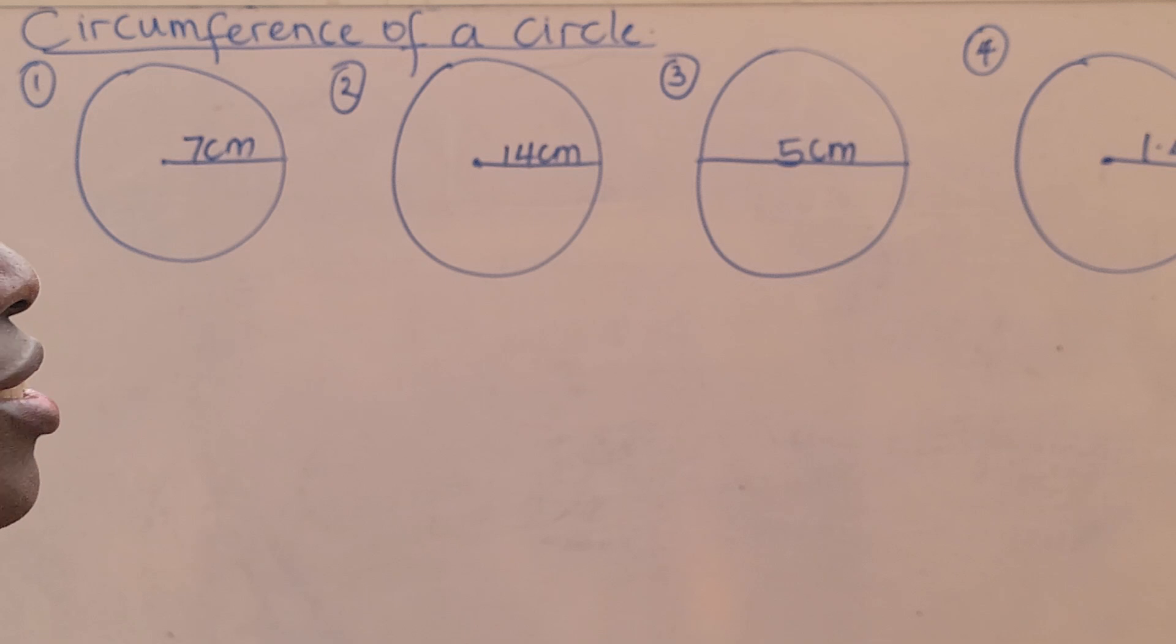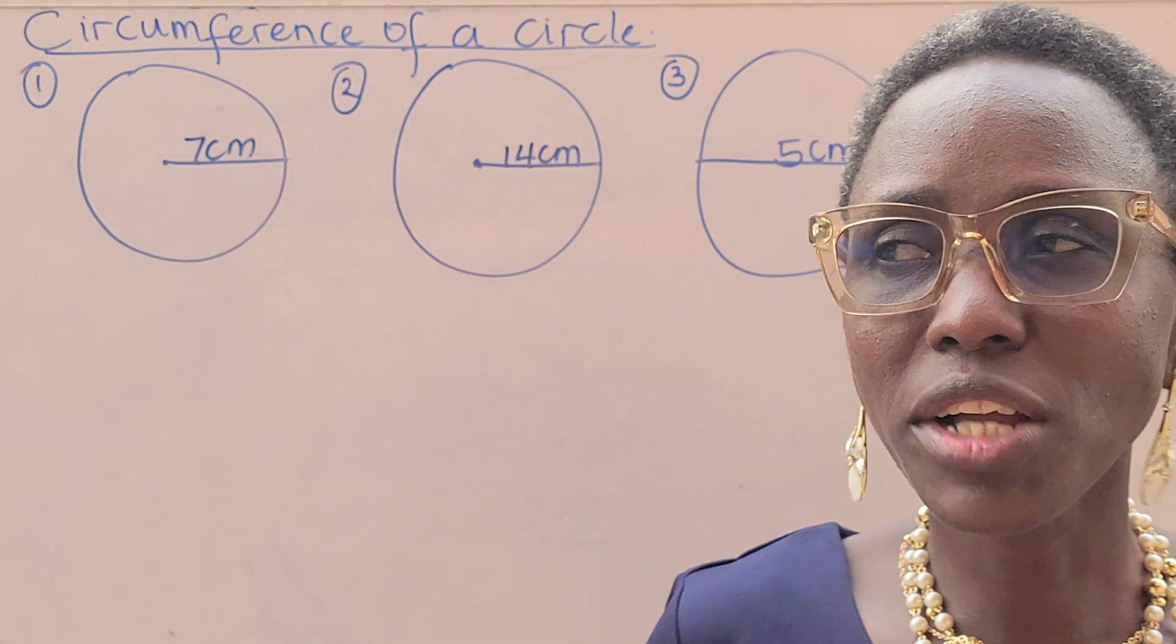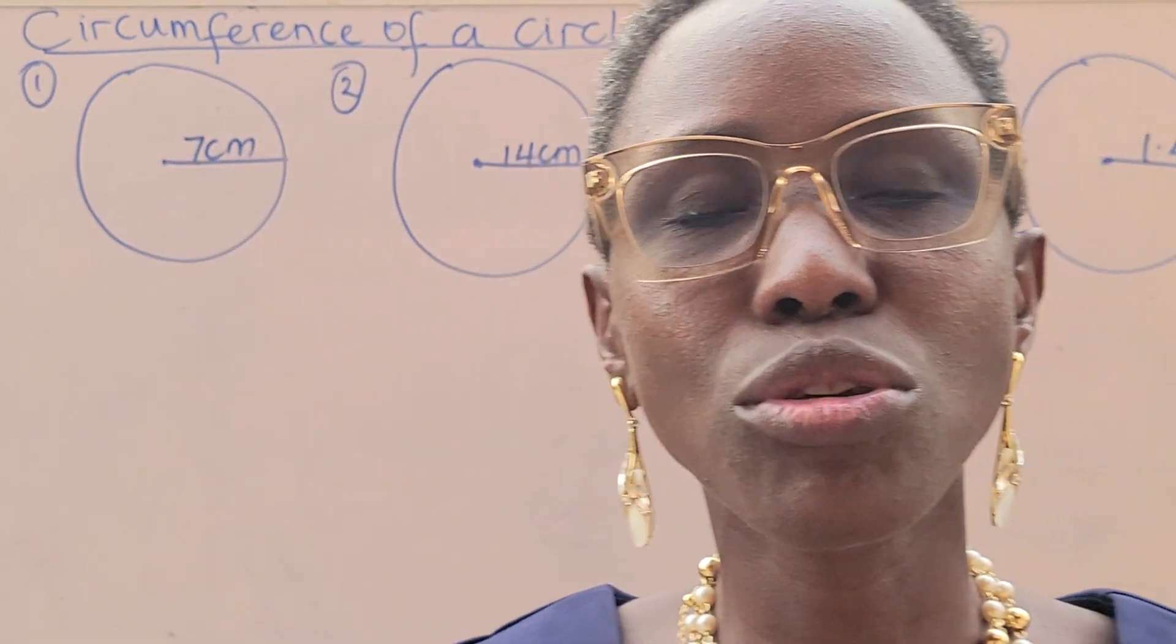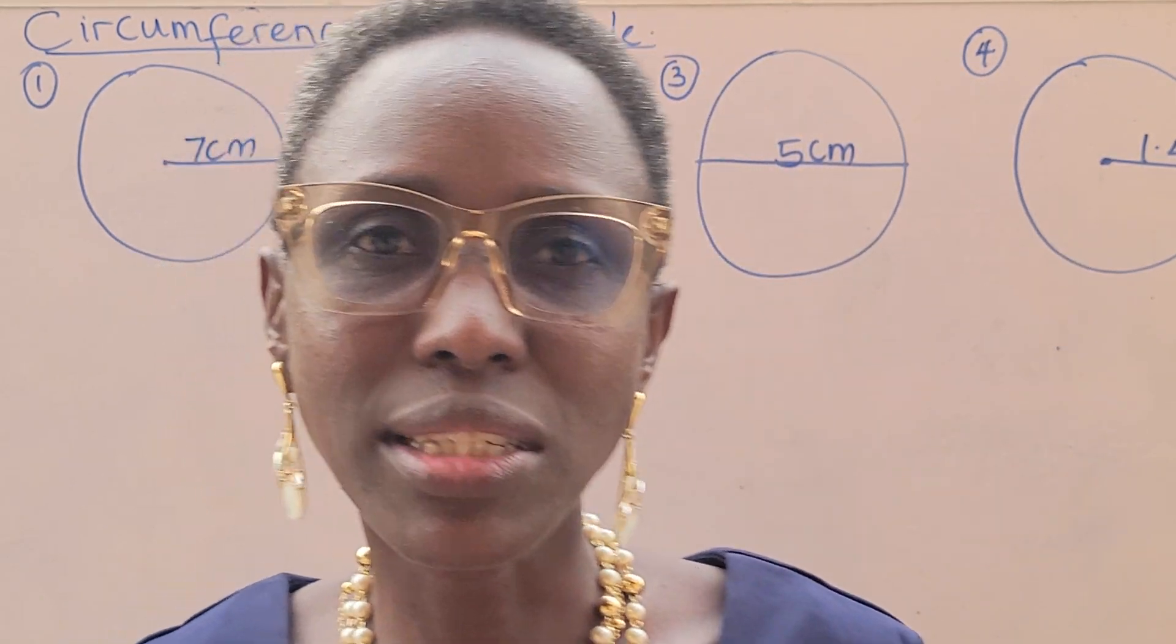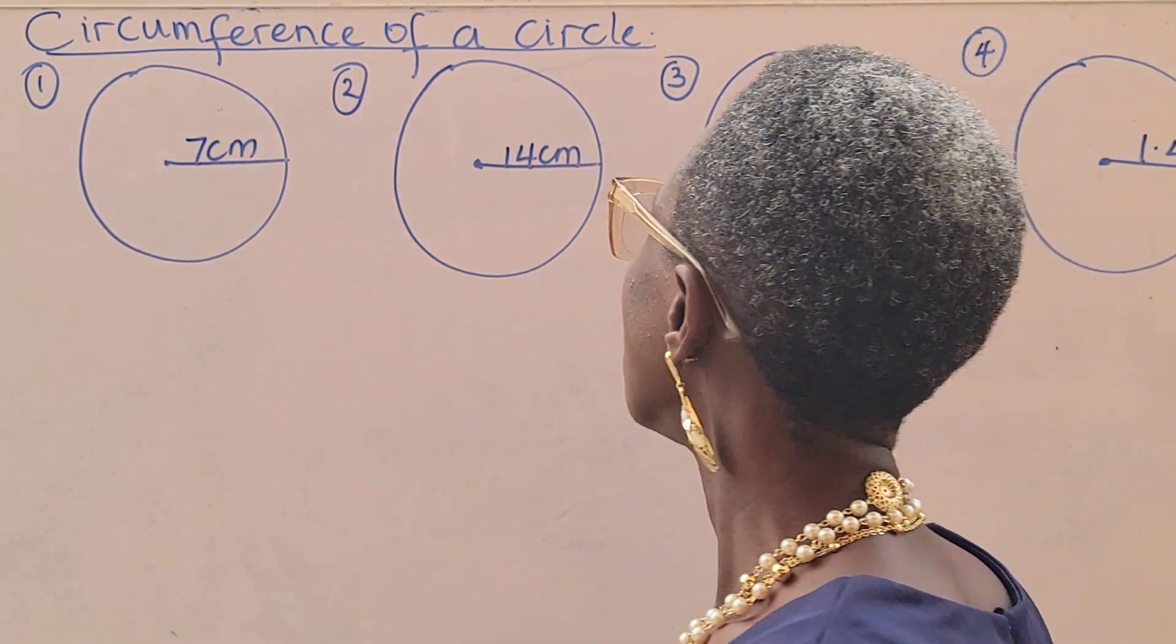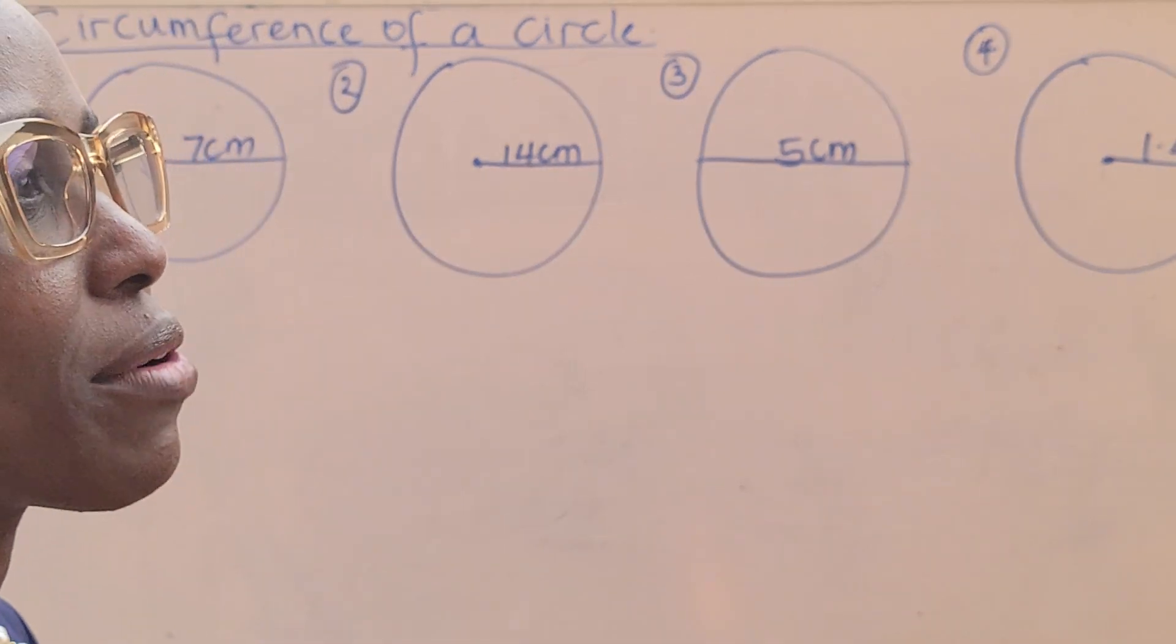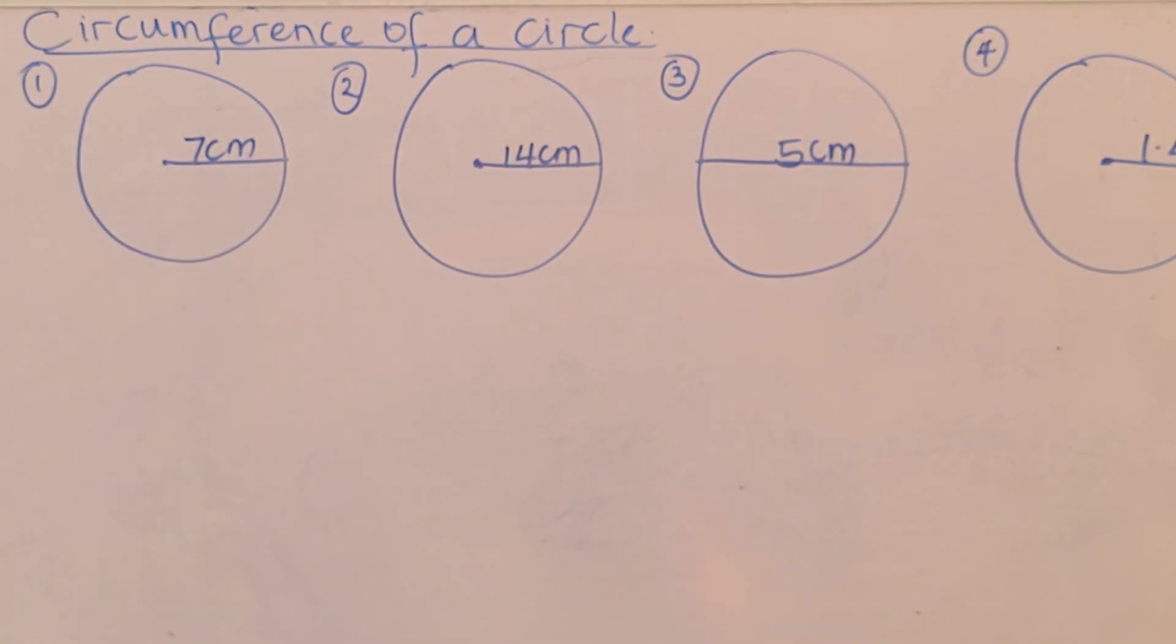We have come today with another topic: circumference of a circle. You can watch my previous video on perimeter of plain shapes, especially square, rectangle, triangle, and irregular shapes. But today I'm focusing on circle, circumference of a circle. Circumference is the same thing as perimeter of a circle. So whether we are asking you to do perimeter of a circle or circumference of a circle, we are still saying the same thing.